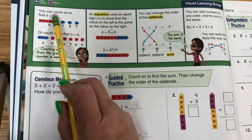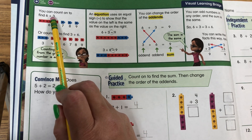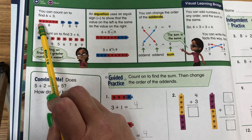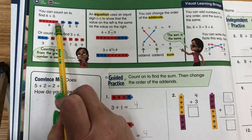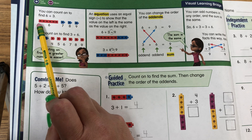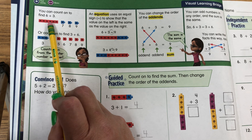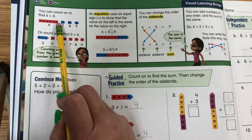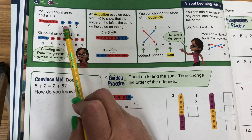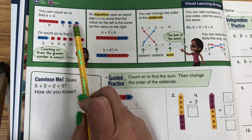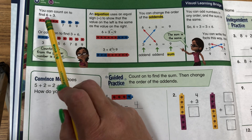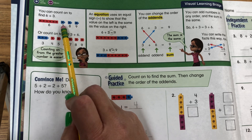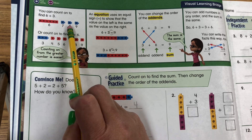You can count on to find 6 plus 3. Look at the blocks. There are 6 red blocks: 1, 2, 3, 4, 5, 6. There are 3 blue blocks: 1, 2, 3. Let's count on: 6, 7, 8.